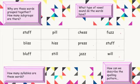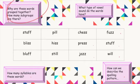Why are these words grouped together? How many subgroups are there? What type of vowel sound do the words have? How many syllables are these words? How can we describe the spelling pattern? Let's look at the first question: why are these words grouped together, and how many subgroups are there?